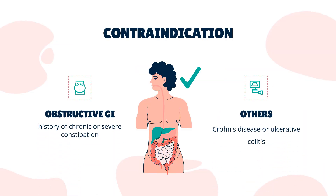Contraindications: Lotronex's prescribing information states that alosetron should not be initiated in patients with constipation. Other contraindications include: history of chronic or severe constipation or sequelae from constipation, intestinal obstruction, stricture, toxic megacolon, gastrointestinal perforation and/or adhesions, ischemic colitis, impaired intestinal circulation, thrombophlebitis or hypercoagulable state, Crohn's disease or ulcerative colitis, diverticulitis, severe hepatic impairment. Concomitant use of fluvoxamine is also contraindicated.